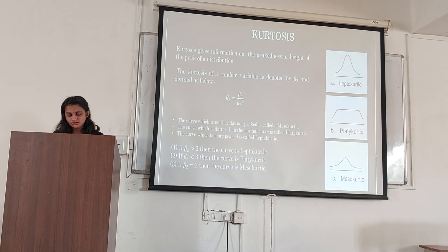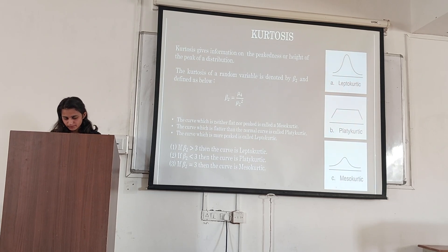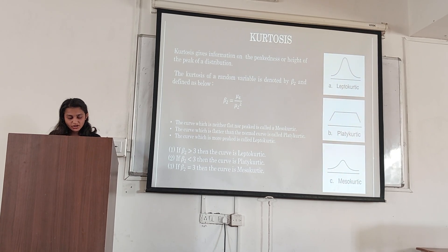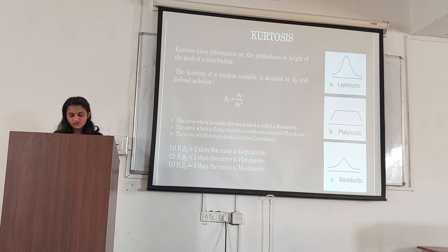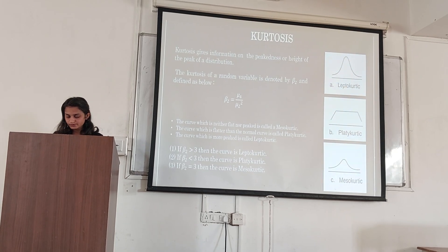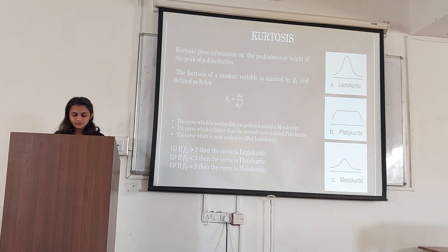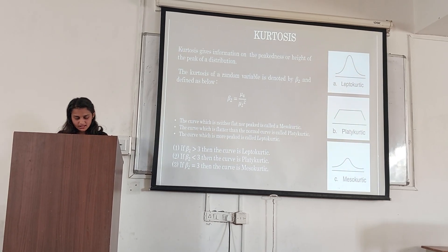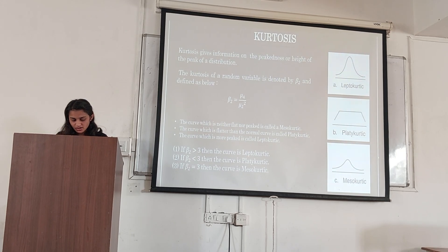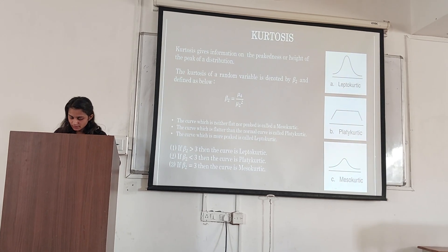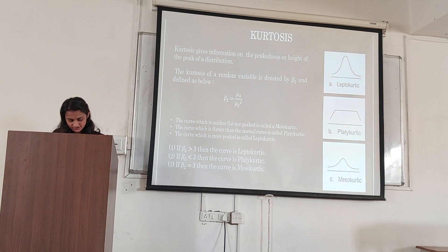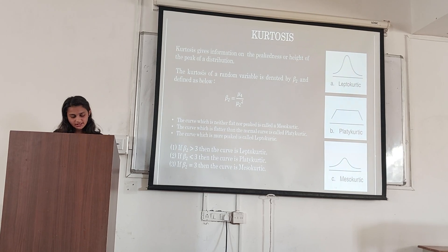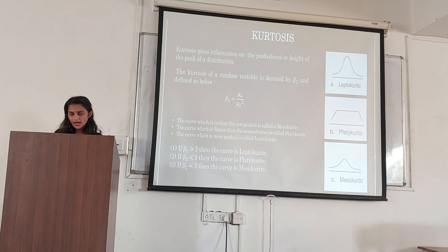Kurtosis gives information on the thickness or height of the peak of a distribution. The kurtosis of a random variable is denoted by beta 2 and defined as: beta 2 equals mu 4 divided by mu 2 squared. The curve which is neither flat nor peaked is called mesokurtic. The curve which is flatter than the normal curve is called platykurtic. The curve which is more peaked is called leptokurtic.